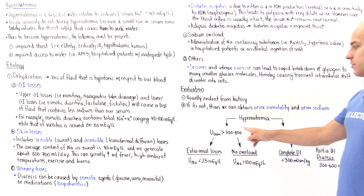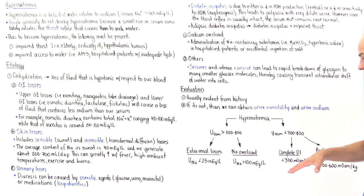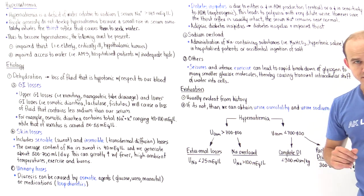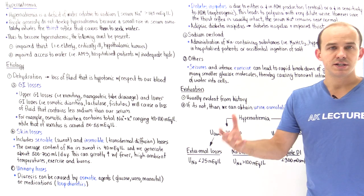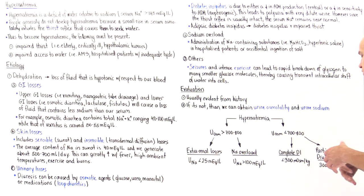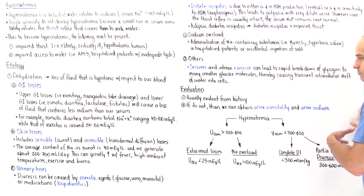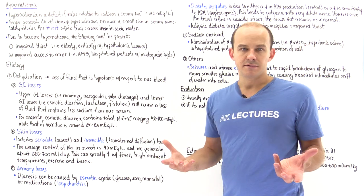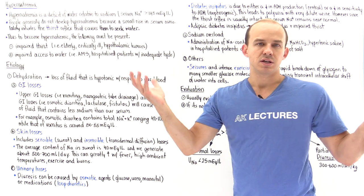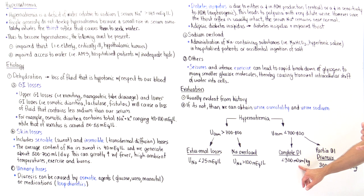If urine osmolality is less than 700 to 800 milliosmoles per kilogram, this means either complete diabetes insipidus, partial diabetes insipidus, or diuresis from loop diuretics or osmotic agents. In a complete DI picture, we're either not producing ADH or the kidneys are insensitive to it — so the kidneys lose a lot of free water, diluting the urine to less than 300 milliosmoles per kilogram.